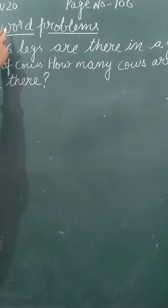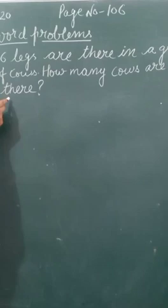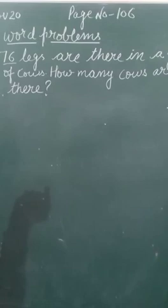Question number 1: 76 legs are there in a group of cows. How many cows are there? Cows have 76 legs. Tell us how many cows are there in total.